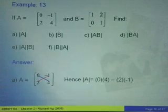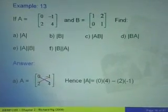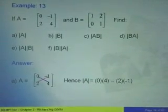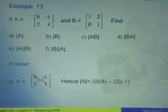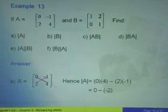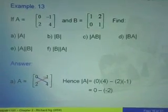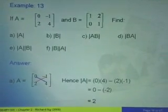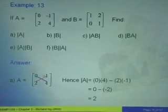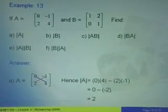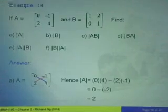Therefore the determinant of A is equals to 0 times 4 minus 2 times negative 1. So from here we will get 0 minus negative 2. So 0 minus negative 2 is equals to 2. So that is the first answer for the determinant of A.